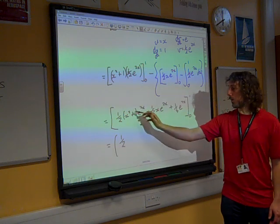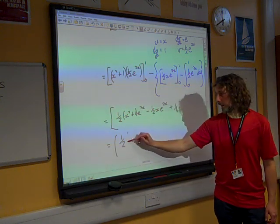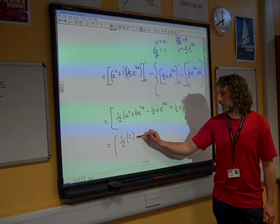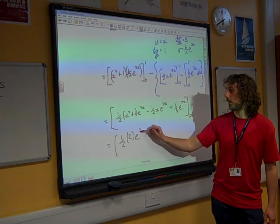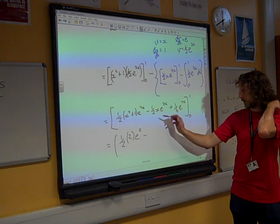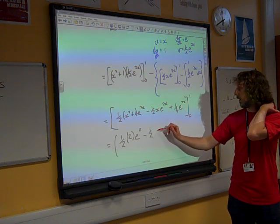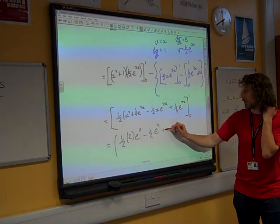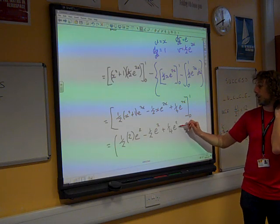Now what have we got? A half of 1 squared plus 1, I'd like that to 2, times e to the 2. Take away a half times x, so a half times 1, times e to the 2, plus a quarter e to the 2.